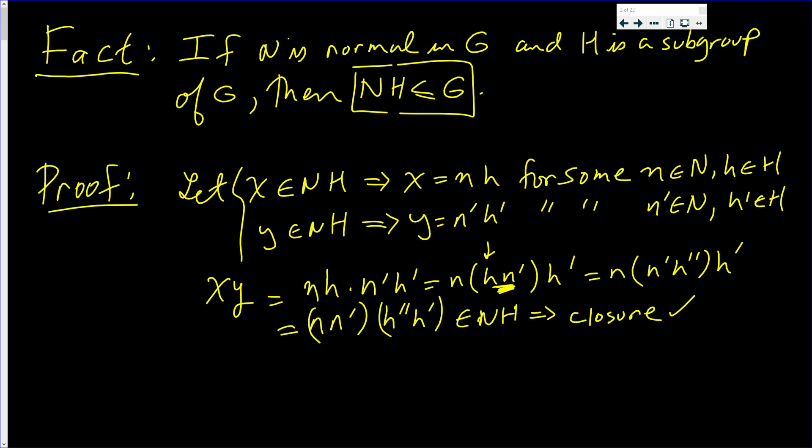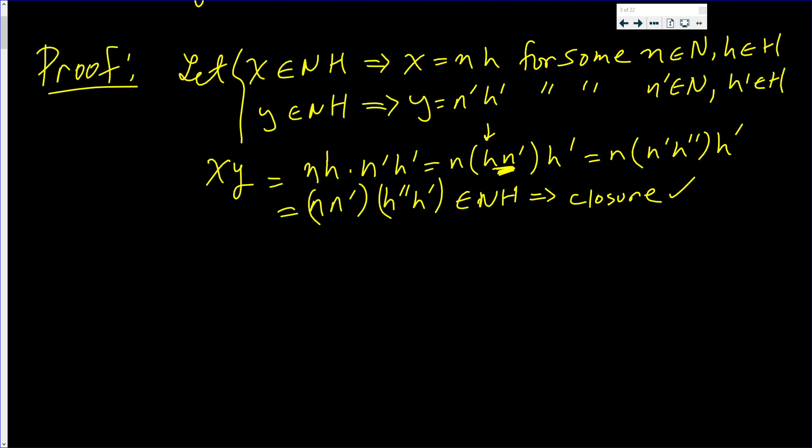Now, I need to show that inverses are in NH. So, we know that X is equal to nh. Well, that implies X inverse is (nh)^{-1}, which is h^{-1}n^{-1}.